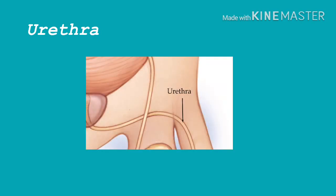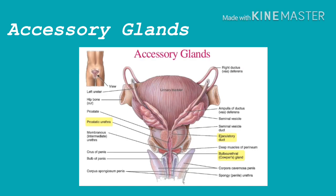The urethra extends from the urinary bladder to the external urethral orifice at the tip of the penis. It is a passageway for sperm and fluids from the reproductive system and for urine from the urinary system. While reproductive fluids are passing through the urethra, sphincter muscles contract tightly to keep urine from entering. The accessory glands of the male reproductive system are the seminal vesicles, prostate gland, and the bulbourethral glands. These glands secrete fluids that enter the urethra.